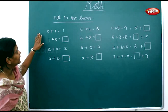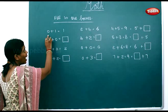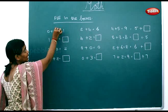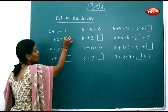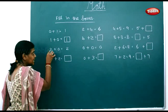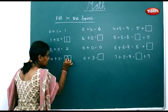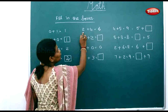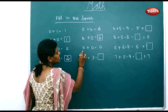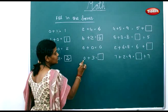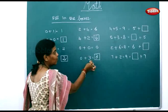Now we will fill in the boxes. 0 plus 1 is equal to 1, so 0 added to any number will be the number itself. 1 added to 0 also will be 1. 2 added to 0 will also be the number itself. 2 plus 4 is 6, and 4 plus 2 is also 6. 0 plus 0 is 0. 0 plus 3 is 3.